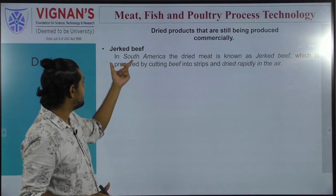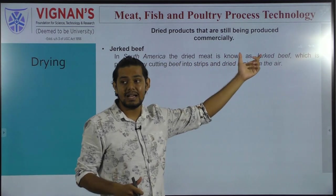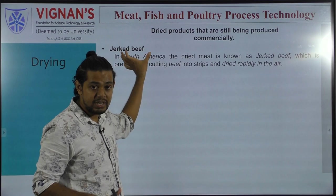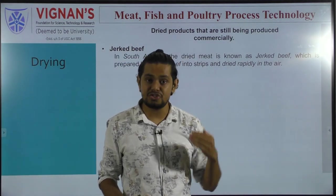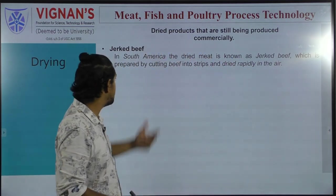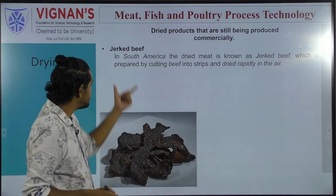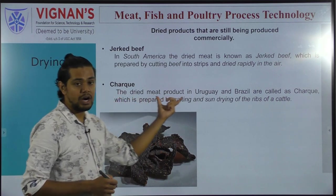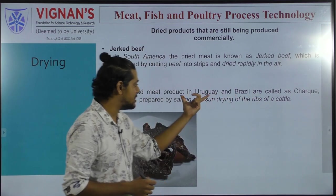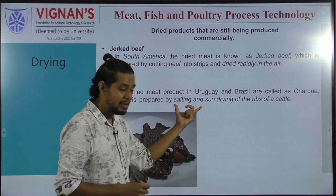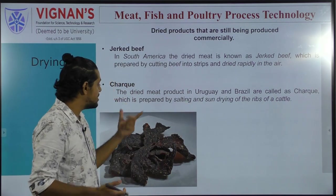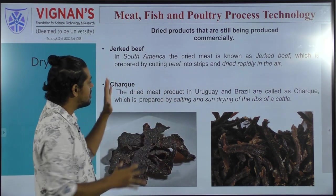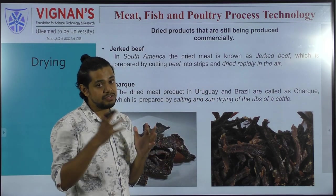One example is jerked beef. In South America, the dried meat is known as jerked beef, prepared by cutting beef into strips and drying rapidly in the air. Another example is chalque — the dried meat product available in Uruguay as well as Brazil, which is sun-dried salted beef. I have given pictures which effectively show how jerked beef and chalque actually look.